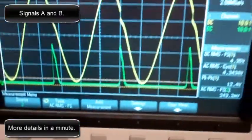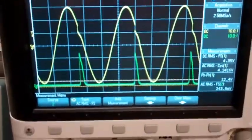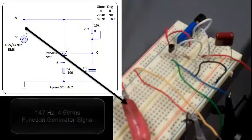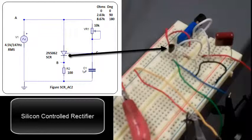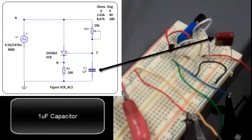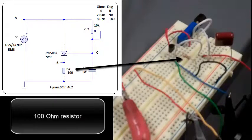Signals A and B on that oscilloscope. There's the function generator connection to the circuit, and the SCR. The potentiometer. The capacitor. And the load resistor.